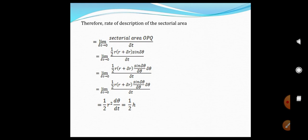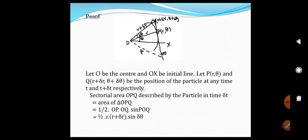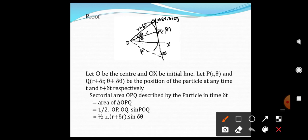Therefore, the rate of description of the sectorial area is given as the limit as δT tends to 0 of the sectorial area OPQ divided by δT. This equals the limit as δT tends to 0 of one-half times (R + δR) times sin(δθ) divided by δT.